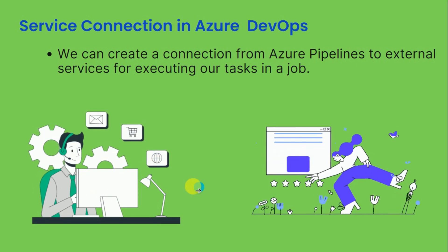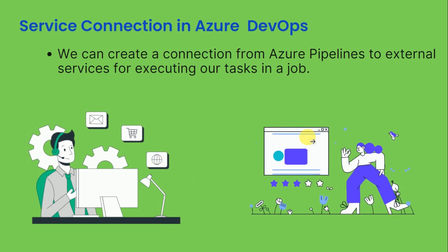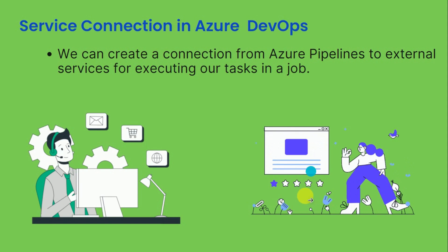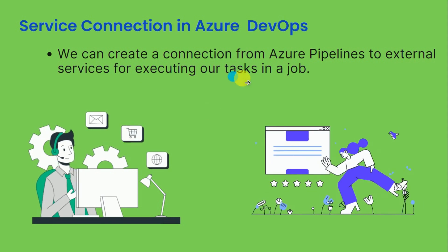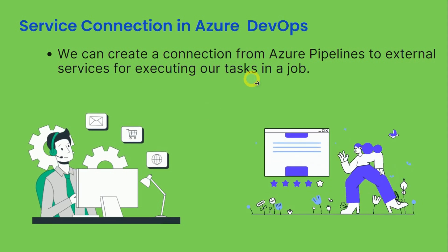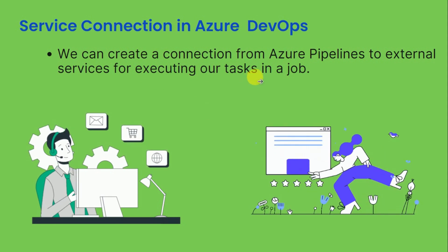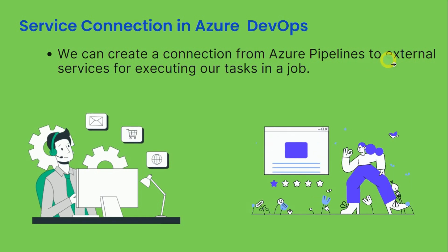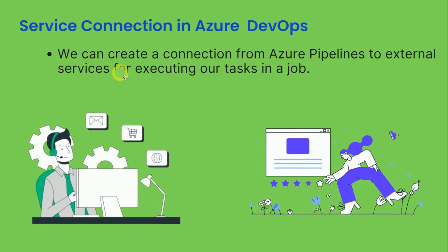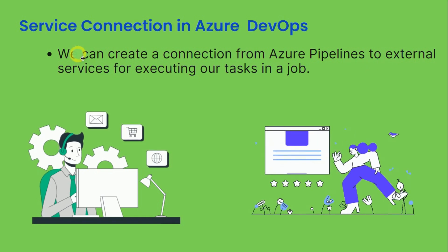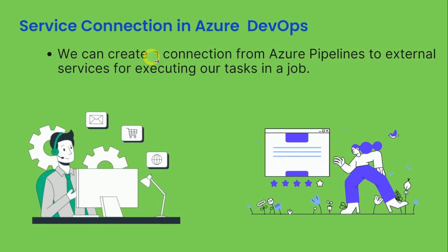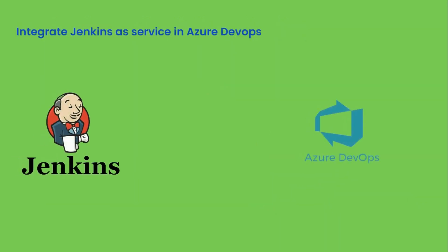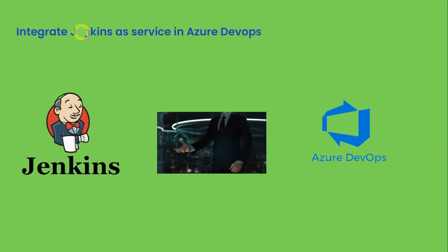There is another system we call Jenkins, and Jenkins will execute our tasks for the Azure Pipelines. So Jenkins is the external service, and for that we are creating the service connections.